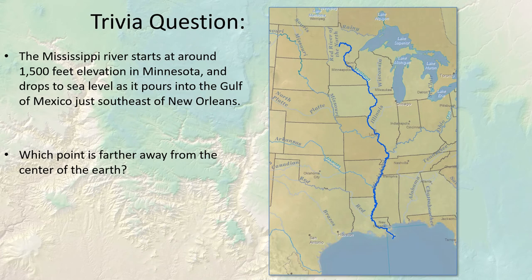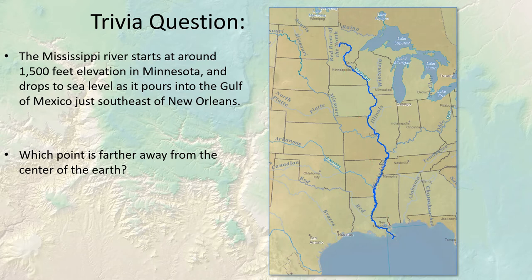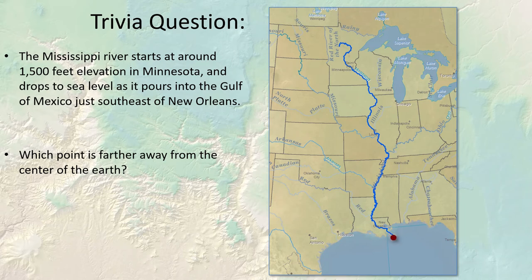Trivia question: the Mississippi River starts in Minnesota at about 1,500 feet elevation and flows down to the Gulf of Mexico. Which point is farther from the center of the earth — where it starts or where it exits? The source is 3,956 miles from the center, and the Gulf outlet is 3,960 miles away. So the river gets farther from the center of the earth as it flows downhill — a neat piece of trivia.